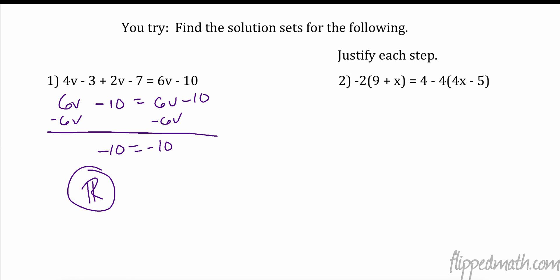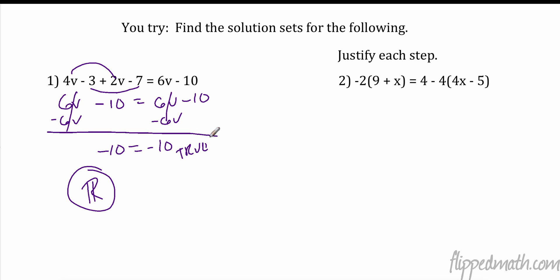All right, number one: I combine like terms and got 6V minus 10. I subtracted 6Vs from both sides — they cancel out. My variable canceled out, so I either have all solutions or no solution. Negative 10 equals negative 10 — that is a true statement, therefore it's all real answers.